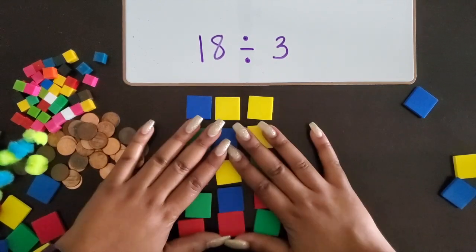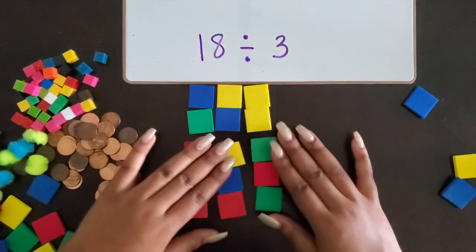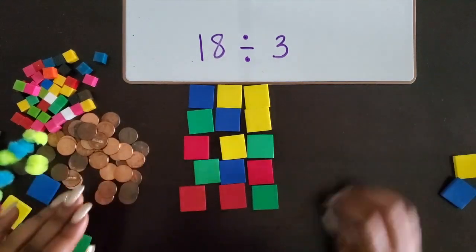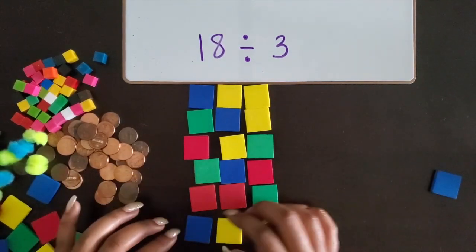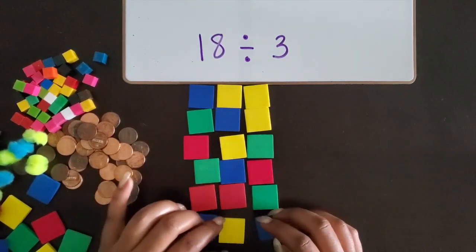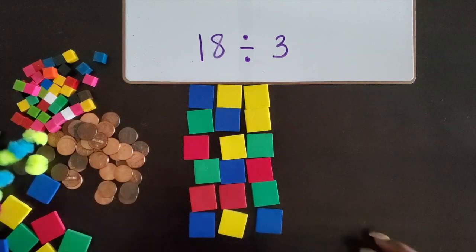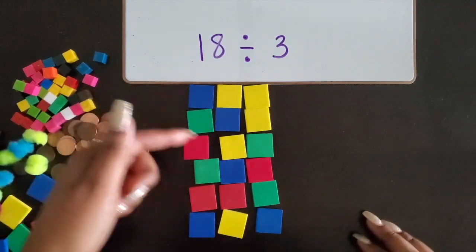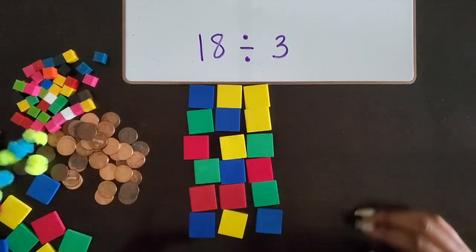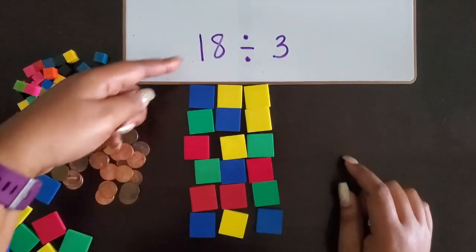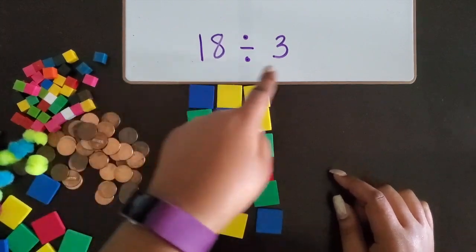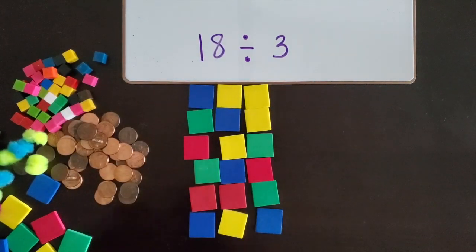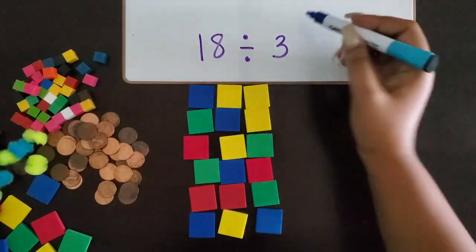Let me push these up, and then I have enough for one more row. So I have six rows of three. We know that 18 divided by 3 equals 6.